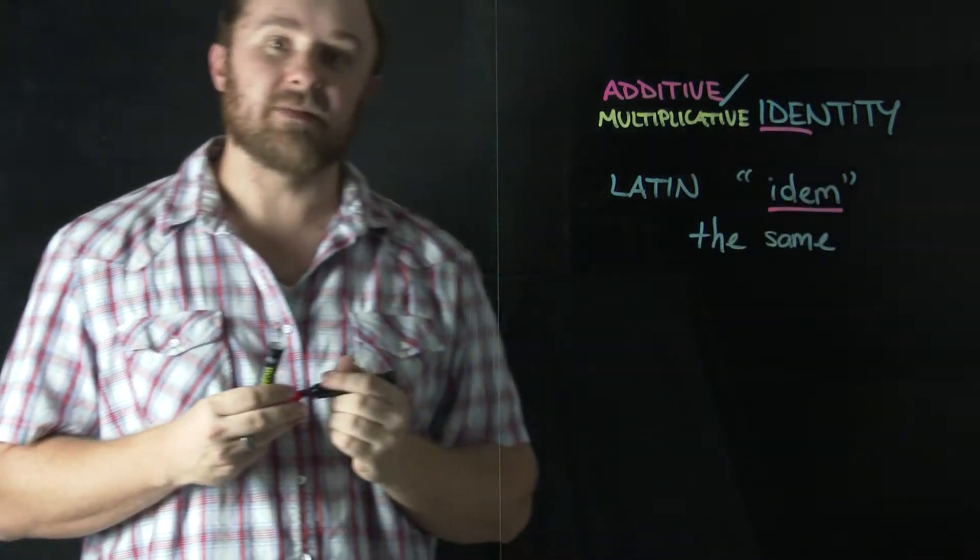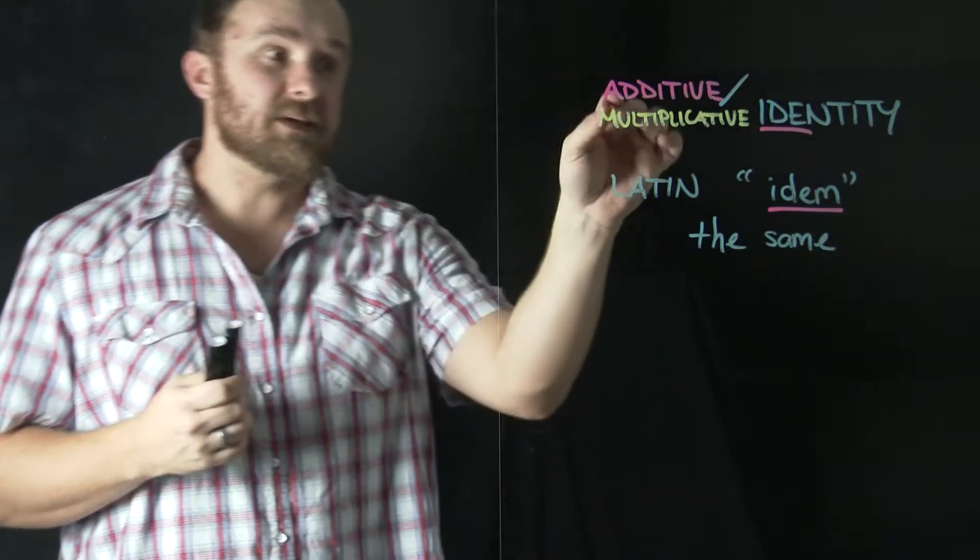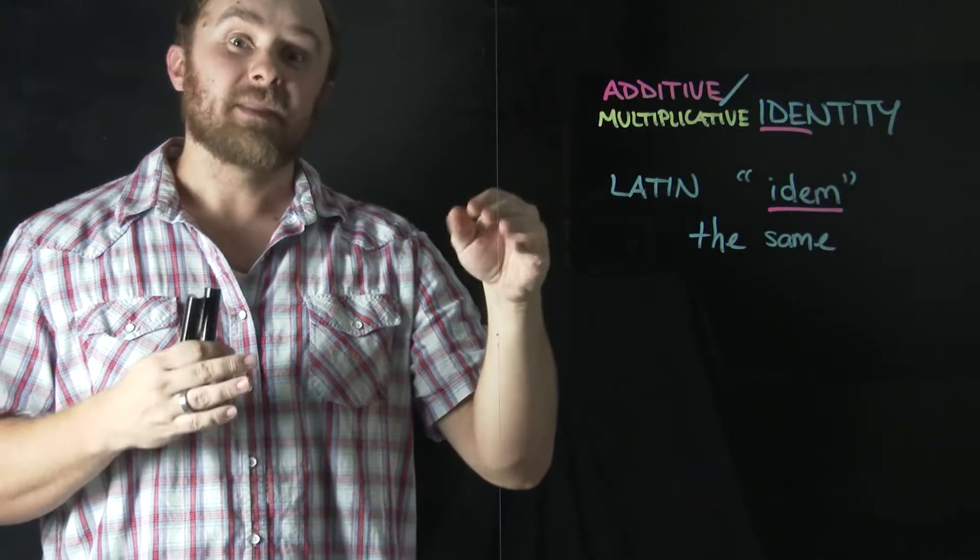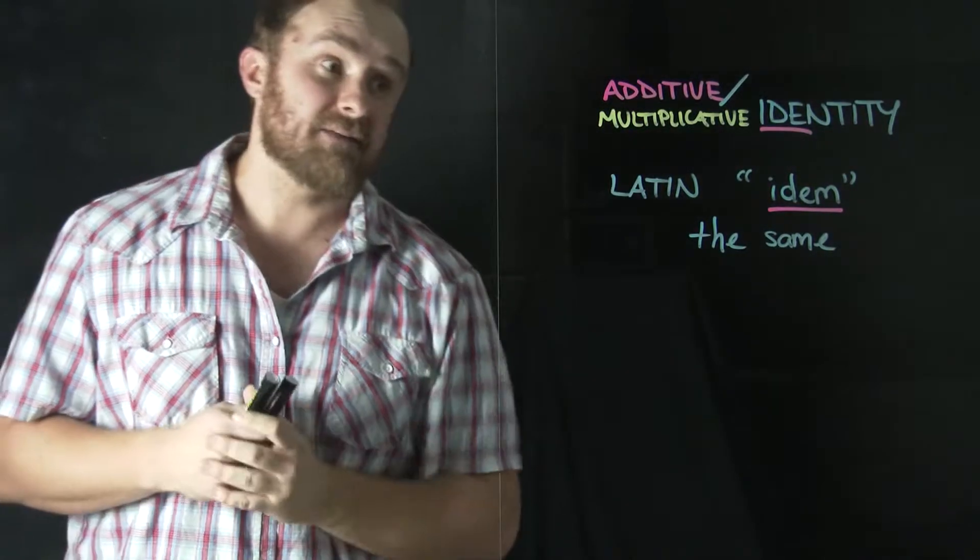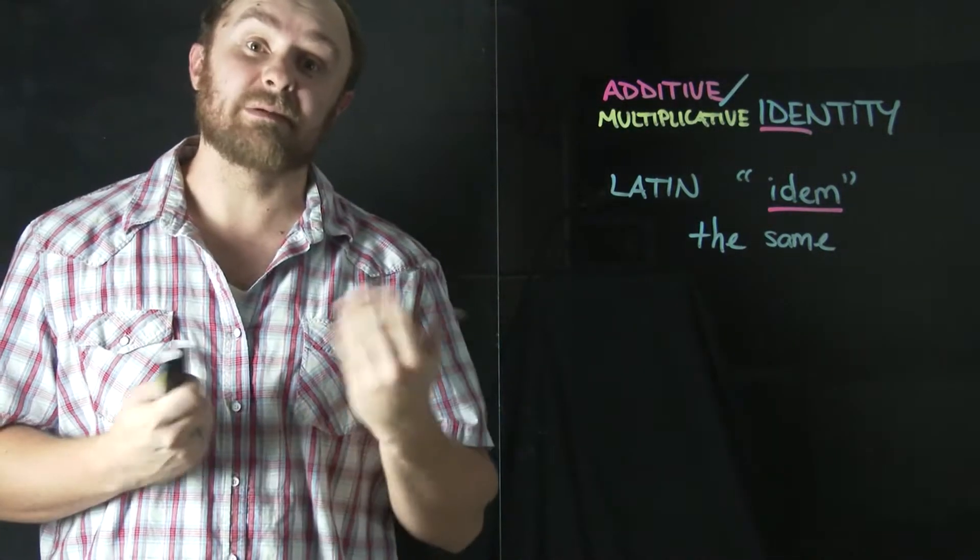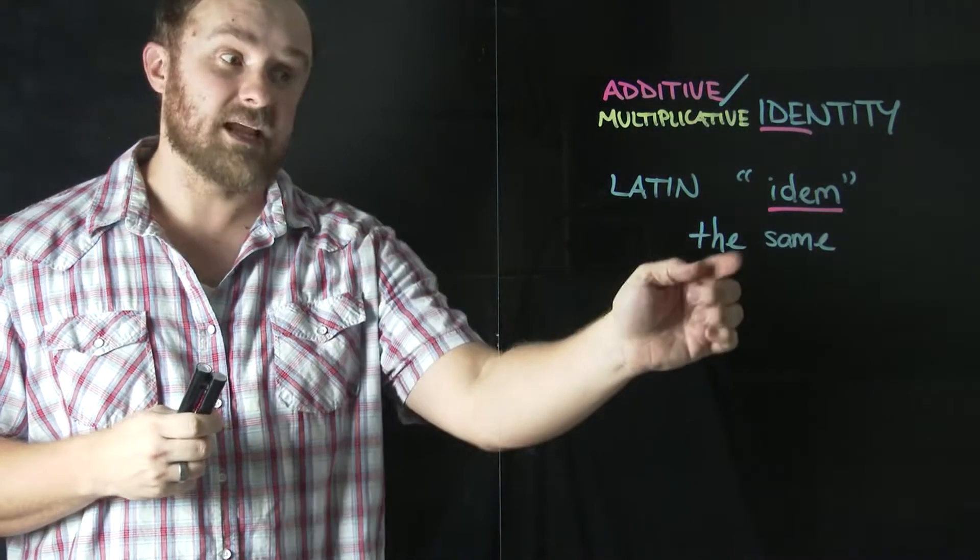So again, we can see that root there. Idem means the same. So the additive identity is what can we do to numbers when we add them that makes those numbers stay the same. And the multiplicative identity is asking us what can we do to numbers when we multiply them to make those numbers stay the same.